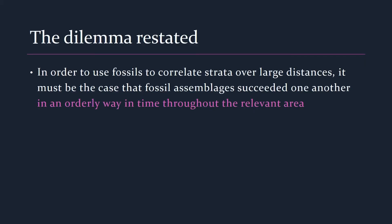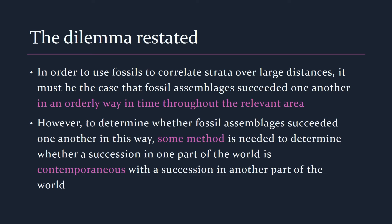Without an empirical demonstration that the fossil record is suitable for correlation, or a widely accepted argument that it can be trusted, geologists faced the following dilemma. In order to use the fossil record to correlate strata over large distances, it must be the case that fossil assemblages succeeded one another in an orderly way in time throughout the relevant area. However, to determine whether fossil assemblages succeeded one another in this way, some method is needed — but this is exactly what fossils were called upon to do. The result was a circularity: since the practice of correlation presupposed that the transition from fauna A to fauna B happened at the same time throughout the relevant area, it could not establish that this was the case. Something that Thomas Henry Huxley pointed out in an 1862 address to the Geological Society of London.